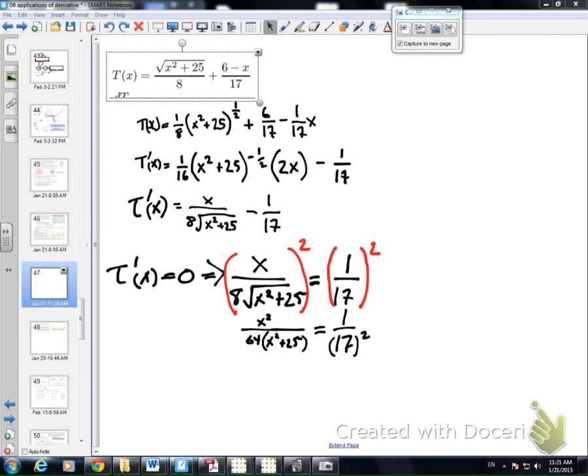Now I have to solve this equation. And I'm going to cross-multiply, so we'll have the x squared times the 17 squared, and then we're also going to have the 1 times 64 times all that stuff. I distributed the 64 there too, by the way.